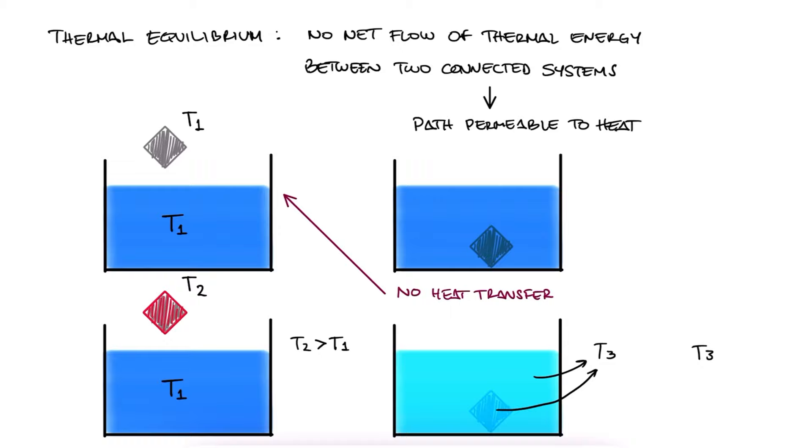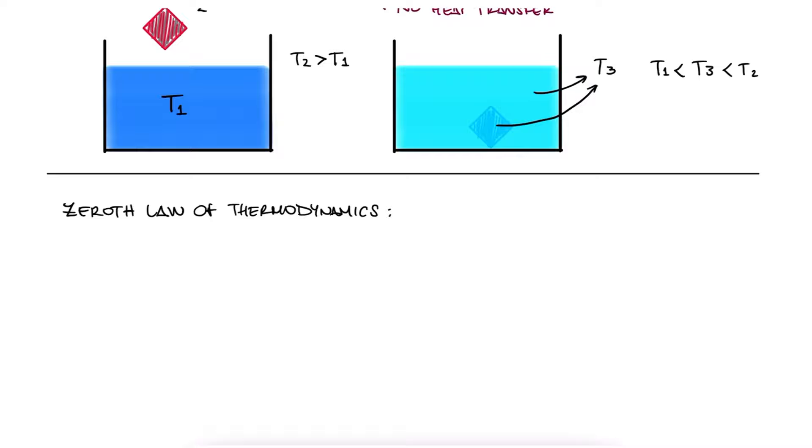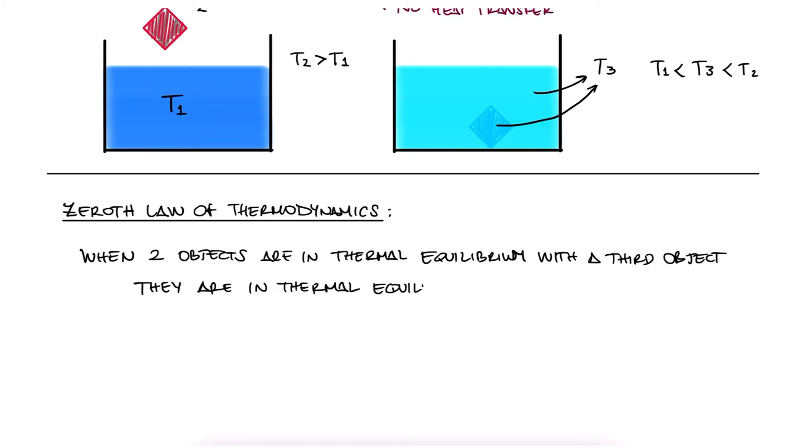The Zeroth law of thermodynamics says that when two objects are in thermal equilibrium with a third object, they are in thermal equilibrium with each other. This just means that the transitive relation, if A is equal to B and B is equal to C, then A is equal to C, is applicable to thermal equilibrium.